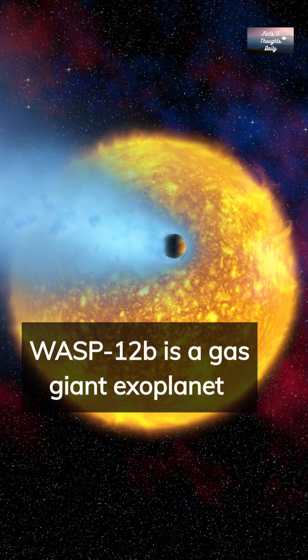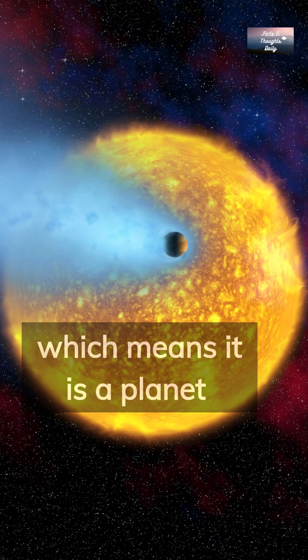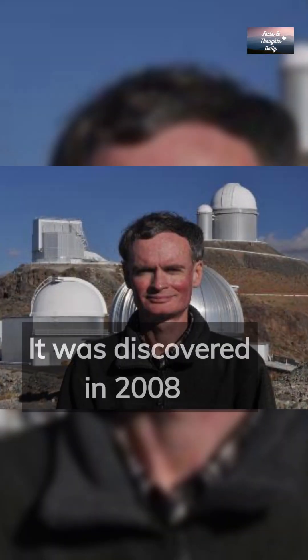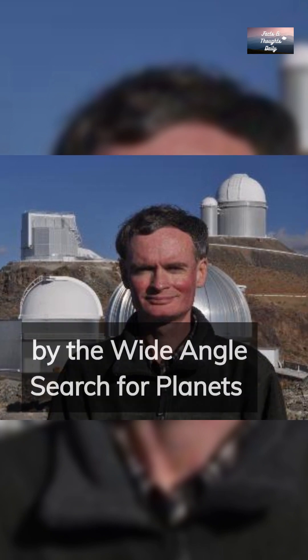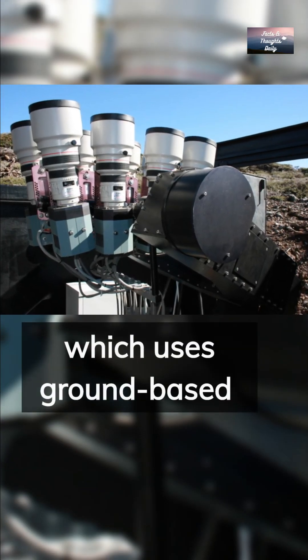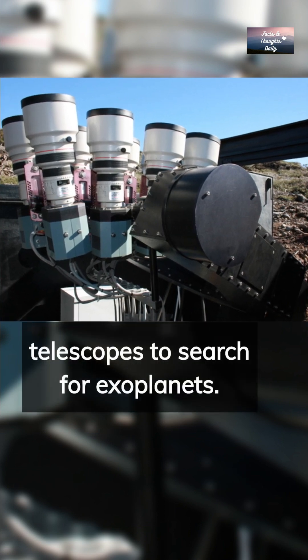WASP-12b is a gas giant exoplanet, which means it is a planet that orbits a star outside of our solar system. It was discovered in 2008 by the Wide Angle Search for Planets, WASP, project, which uses ground-based telescopes to search for exoplanets.